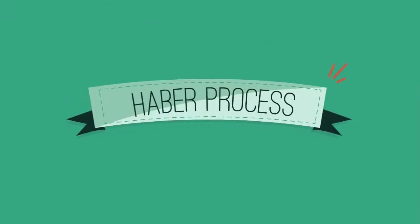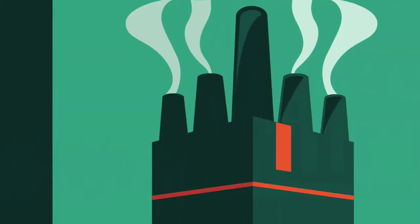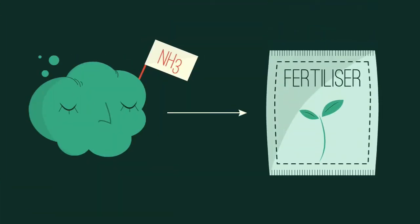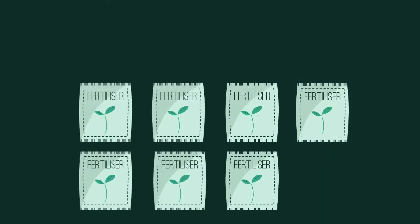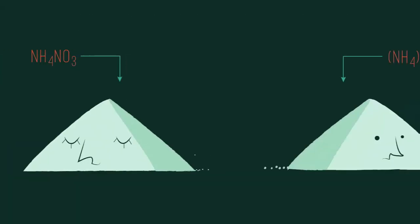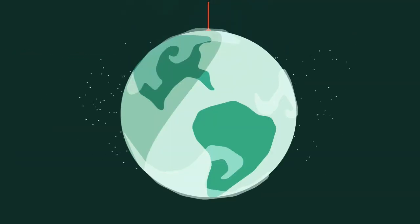The Haber process has enabled ammonia to be produced on an industrial scale. Ammonia, as we know, can be used to make fertilizers. The large-scale production of ammonia-based fertilizers, such as ammonium nitrate and ammonium sulfate, has made it possible to sustain global food production.